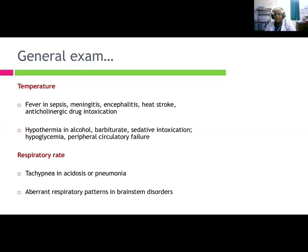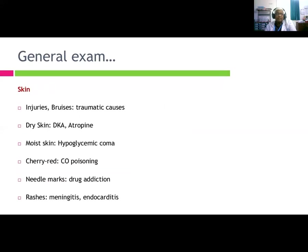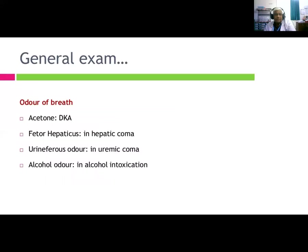Aberrant respiratory patterns occur in brainstem disorders. Skin findings: injuries and bruises suggest traumatic cause; dry skin suggests diabetic ketosis or atropine intoxication; myxedema suggests hyperglycemia; cherry-red skin suggests carbon monoxide poisoning; needle marks indicate drug addiction; rashes suggest meningitis or endocarditis. Odors: acetone breath in diabetic ketoacidosis, fetor hepaticus in hepatic coma, uriniferous odor in uremic coma, and alcohol odor in alcohol intoxication.